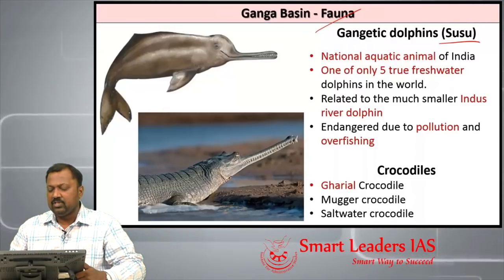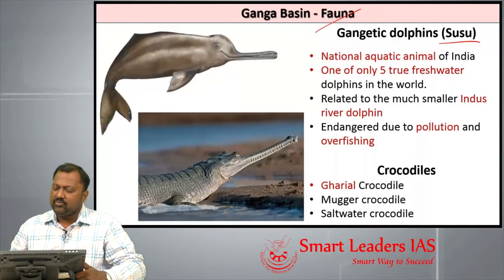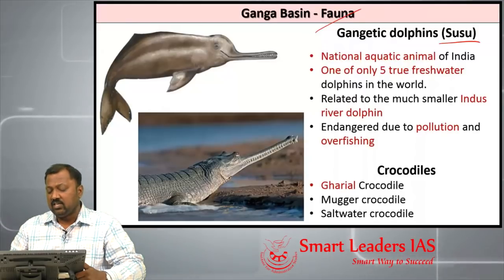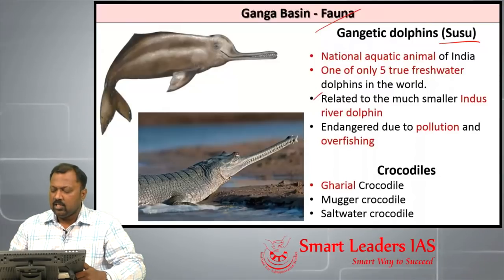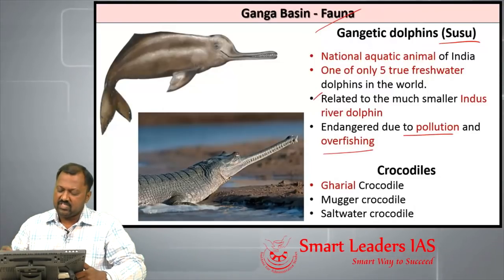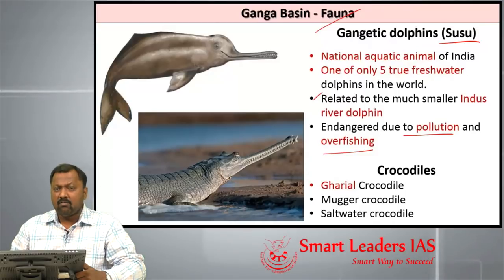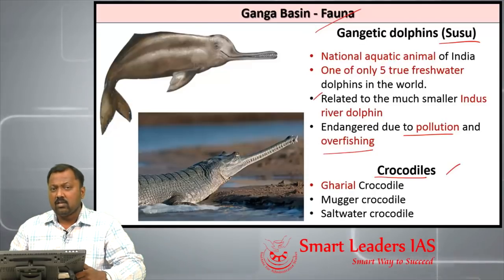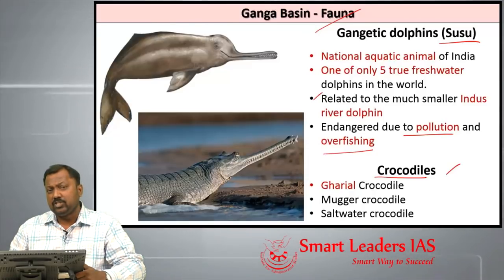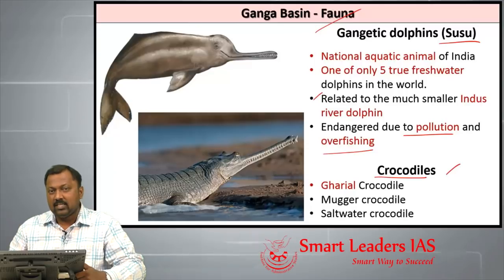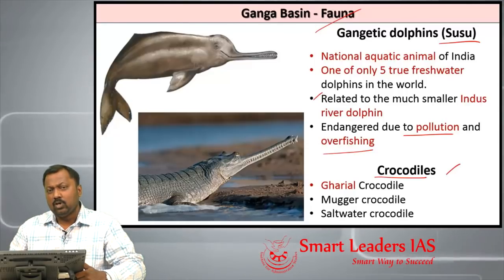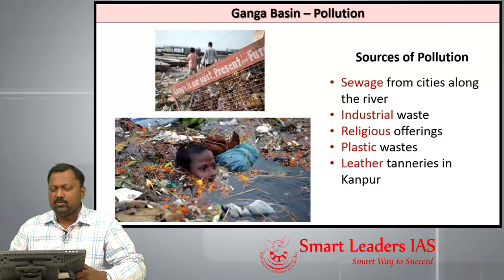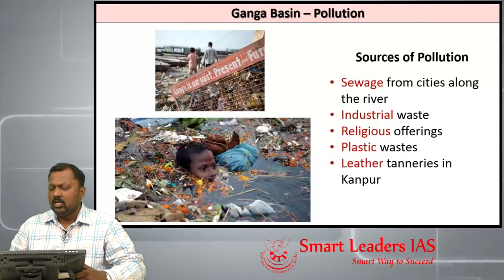Gangetic dolphins are referred to as 'susu' and are the national aquatic animal of India. They are one of only five true freshwater dolphins in the world, related to the much smaller Indus river dolphin, and are endangered due to pollution and overfishing. Other species in the Ganga basin include gharial crocodiles, mugger crocodiles, and saltwater crocodiles — among them, the gharial is endemic to India.